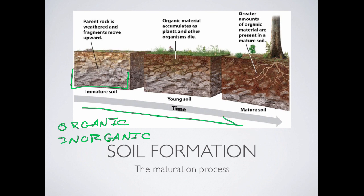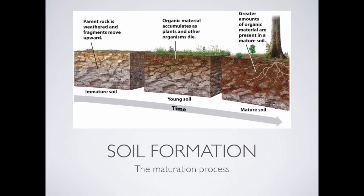Over time, soil matures. Immature soil is mostly sediment and very little organic material, so it's tough to grow stuff in because you need organic material to provide drainage, water retention, and nutrients. As some organisms move in, live their lives, and pass away, they become part of the organic component of the soil. A young soil has quite a lot of sediment but also more organic material, allowing more plants and animals to live there. Eventually, as that community lives and dies and becomes part of the soil, you get a mature soil — one with a good balance of organic and inorganic material, making it the best for growing things.